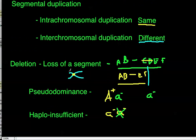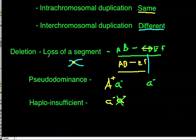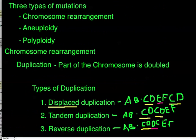Just a quick review. We covered segmental duplication, that's anything longer than 1000 base pairs in length. Intrachromosomal means same chromosome, interchromosomal means between chromosomes, so different. Deletion is just a loss of a segment, can be lethal if the centromere is involved. Pseudodominance is when your dominant trait is deleted and your recessive trait is expressed. Haploinsufficient is when the trait isn't expressed because one of the genes got deleted. In the next video, we'll cover the next part of chromosome rearrangement.